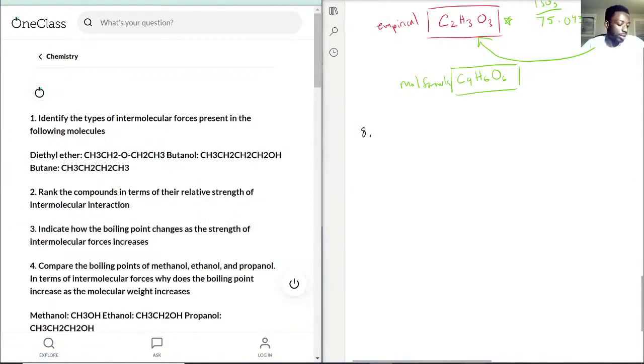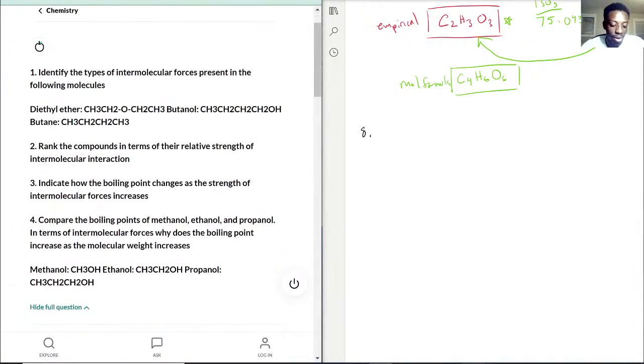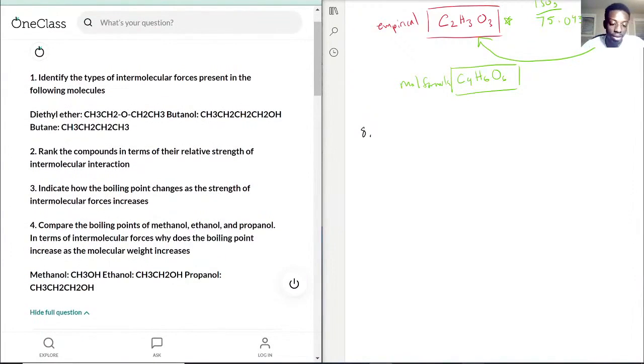This question is asking us to identify the types of intermolecular forces present in these molecules, then rank them, indicate how the boiling point changes, and compare boiling points. There's a lot of multi-step parts to this question, but let's first make it easier by listing all the types of intermolecular forces.